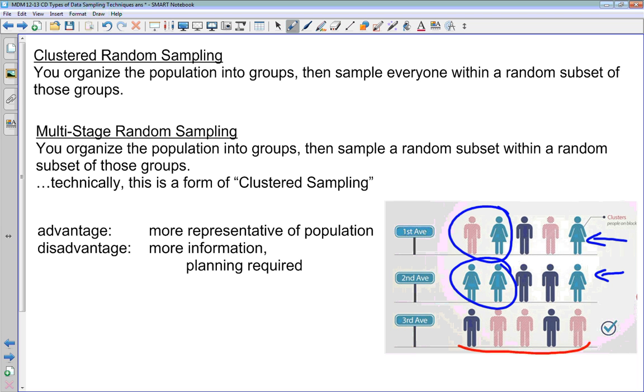This is a form of clustered sampling, just a little bit more complicated. The advantage here is that this is again a little bit more representative of the population. But again, you need more information to start with. You need a lot more planning to implement this.